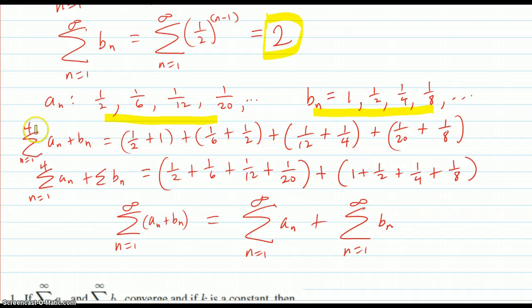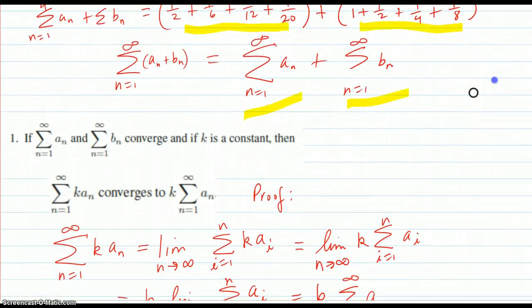Here's the An sequence and here's the Bn sequence. The sum of the first four terms is adding terms from one to the other. One and a half plus one, one-sixth plus one-half, and so on. You can see that all you have to do is reorder those for these sums. When you take n going to infinity, you get this and this.